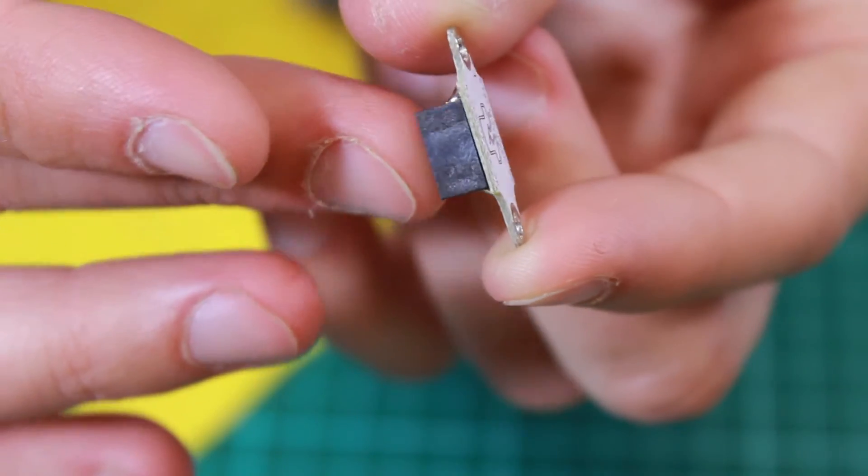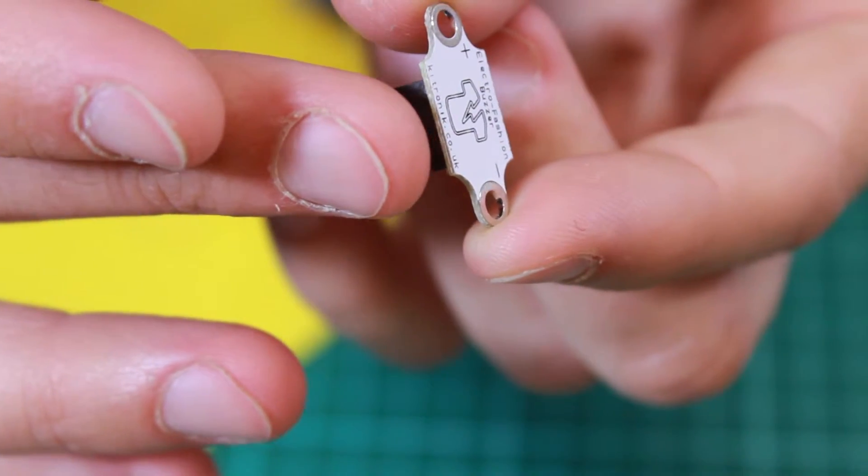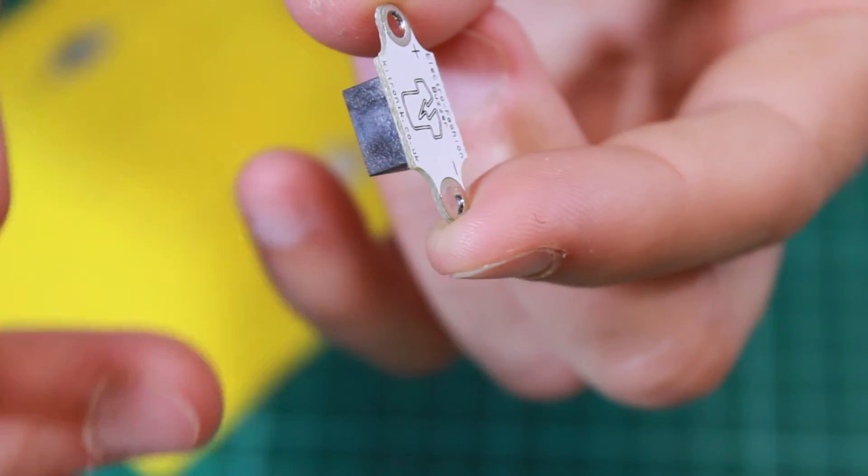The buzzer sits on one side of the PCB, and the back is flat so that it can be mounted tight onto a piece of fabric.